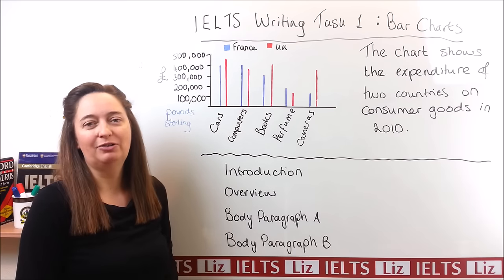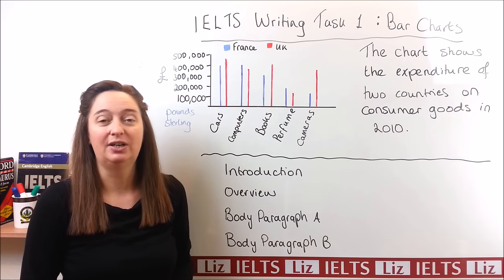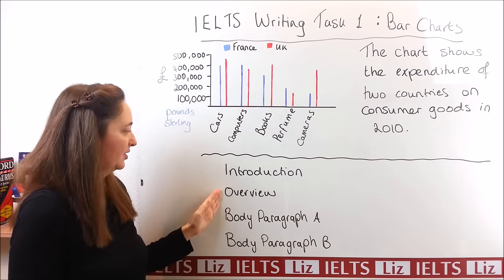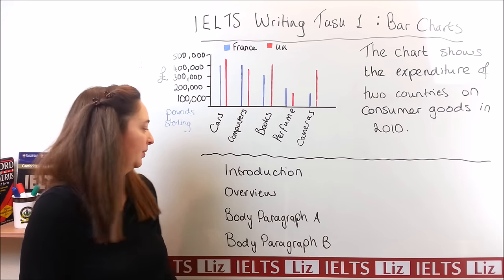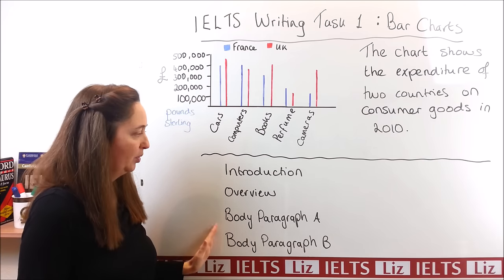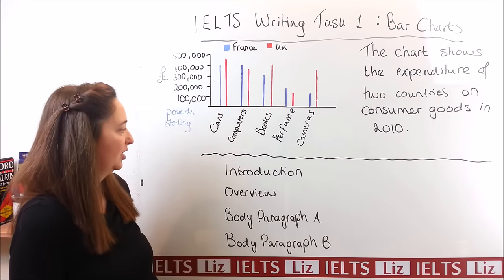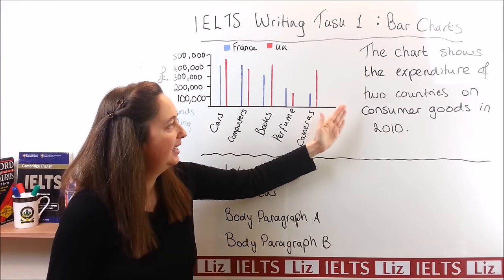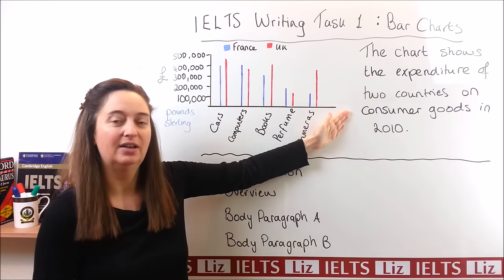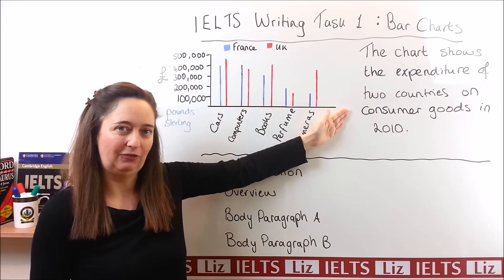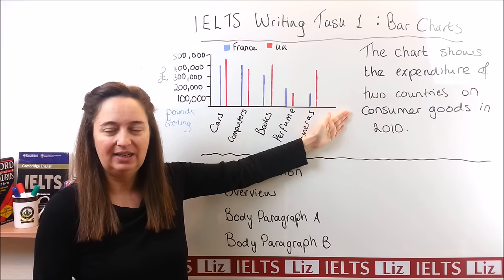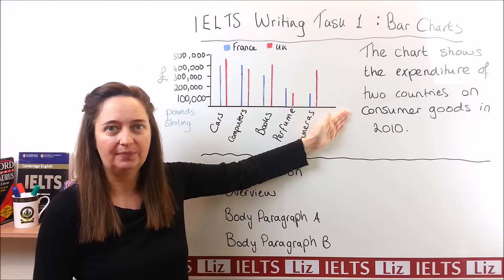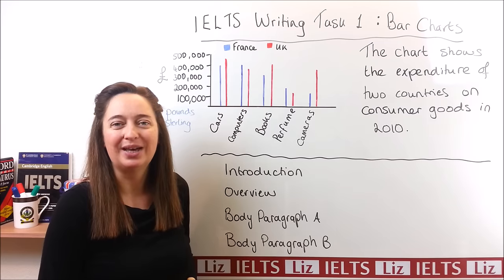The first paragraph that you will need to write is your introduction. Then you will have something called an overview. After that, you've got two body paragraphs. For the introduction, we need to paraphrase this statement here — so the information that IELTS gives you. We need to write it again in our own words for the introduction. Let me show you how to do that now.